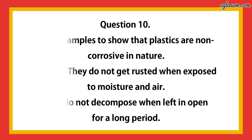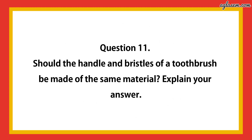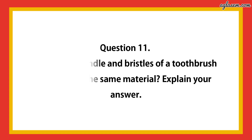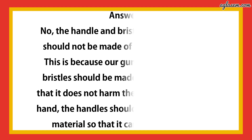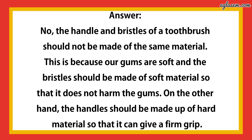Question number 11: should the handle and bristles of a toothbrush be made of the same material? The answer is no. The handle and bristles should not be made of the same material. This is because our gums are soft, so the bristles should be made of soft material so that it does not harm the gums. On the other hand, the handle should be made of hard material so that it can give a firm grip.